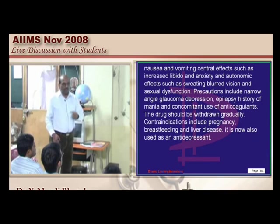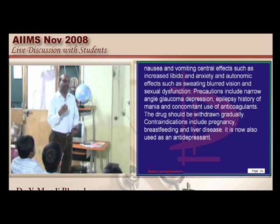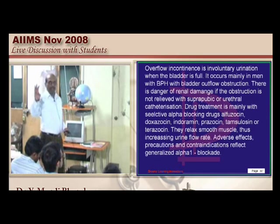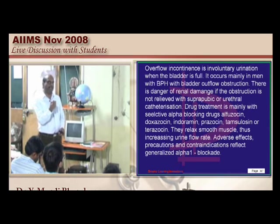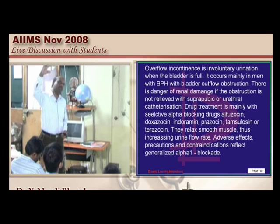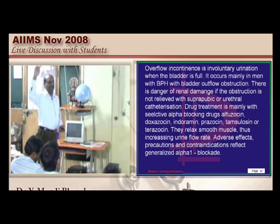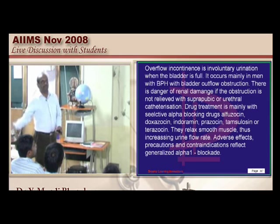If the sphincter is strong, even if the detrusor is trying to push out urine when the person is laughing or coughing, the sphincter will prevent it. Duloxetine is used for stress incontinence by strengthening the sphincter sympathetic system via reuptake inhibition of norepinephrine. Whereas flavoxate, tolterodine, and solifenacin all antagonize muscarinic receptors, causing parasympatholysis and detrusor weakness to manage urge incontinence.